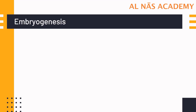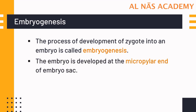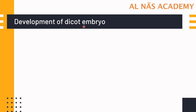Let us first understand what we mean by embryogenesis. Embryogenesis is the process of development of a zygote into an embryo, and it takes place at the micropylar end of the embryo sac. The growth of the embryo triggers only after a certain amount of endosperm is formed, and after fertilization embryonic development begins.